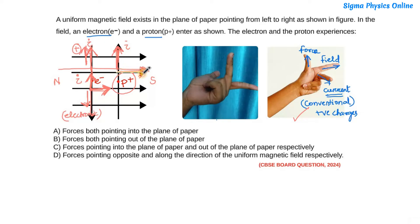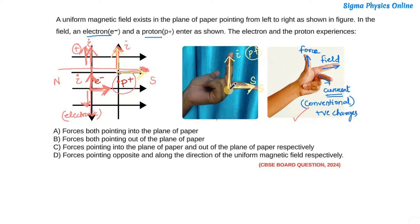Now applying Fleming's left hand rule for the proton: the magnetic field goes from left to right, so the forefinger points to the right. The conventional current is in the upward direction, so the middle finger points upward. With this orientation, the thumb points inward — that is, into the plane of the paper. So the force acting on the proton is directed into the plane of paper.